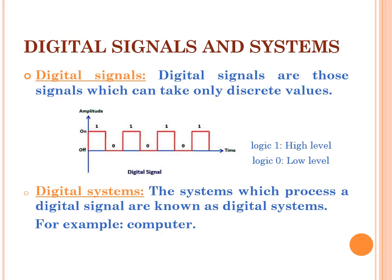Digital signals and systems. Digital signals are those signals which can take only discrete values, like 0 and 1. Logic 1 is high level and logic 0 is low level. When we draw it on an amplitude and time graph, it will be a square wave. Digital systems are those systems which process digital signals, like a computer.